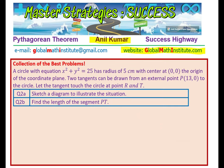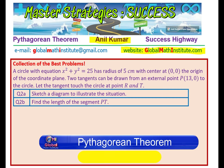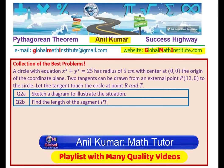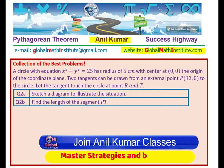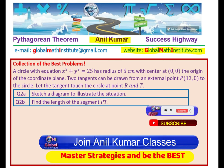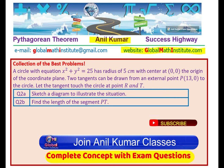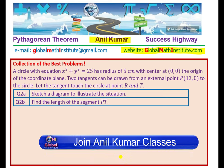Here is a simple question relating a circle with a tangent. However, not providing the diagram makes it extremely difficult. The question: a circle with equation x² + y² = 25 has a radius of 5 cm with center at (0, 0), the origin. Two tangents can be drawn from an external point P at (13, 0) to the circle. Let the tangents touch the circle at points R and T. Part (a): sketch a diagram to illustrate this situation. Part (b): find the length of segment PT.